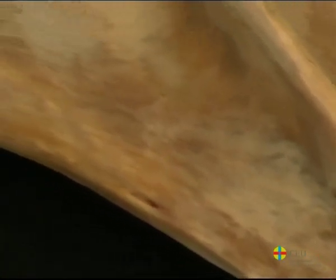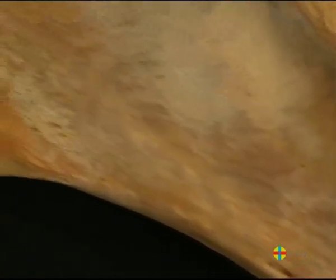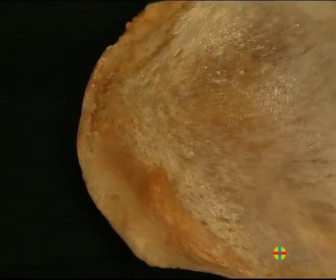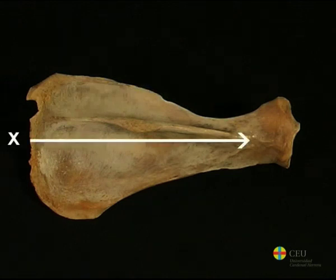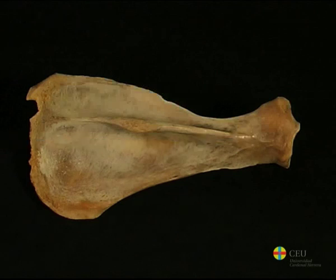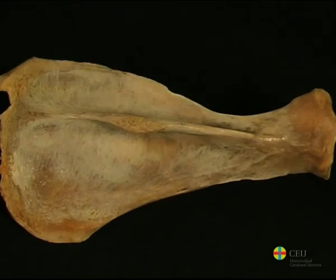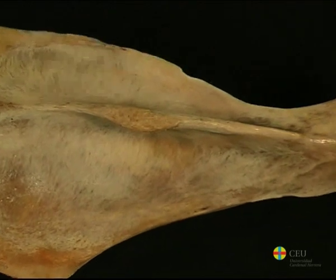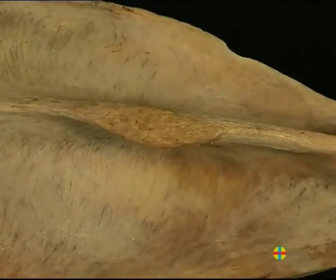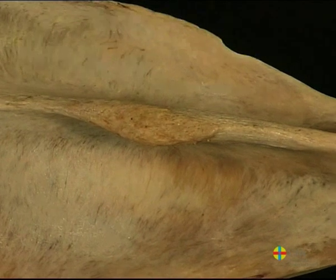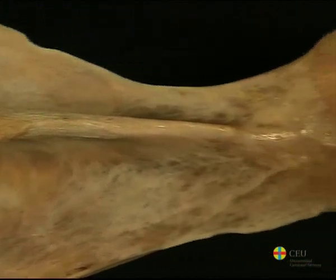The caudal border may be rectilinear or slightly concave. On the lateral side, the spine of the scapula is present, which extends from the dorsal border to the neck of the bone. In it, the trapezius muscle is inserted. Halfway down the spine is the tuberosity of the spine, more prominent in equines than in other species. The distal part of the spine, in which the deltoid muscle originates, progressively decreases in size.